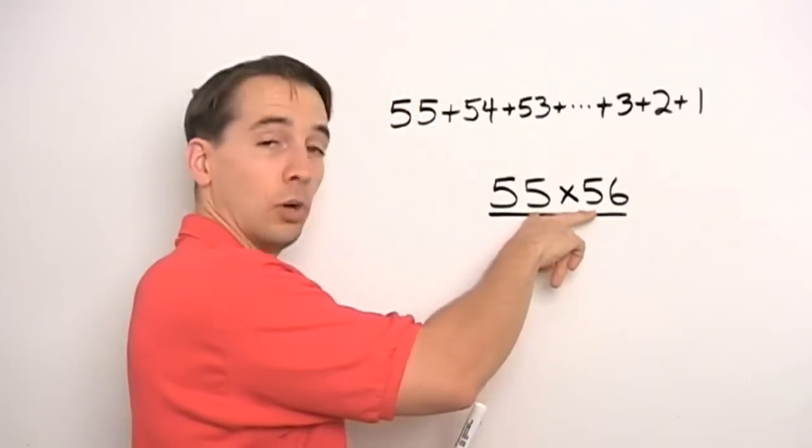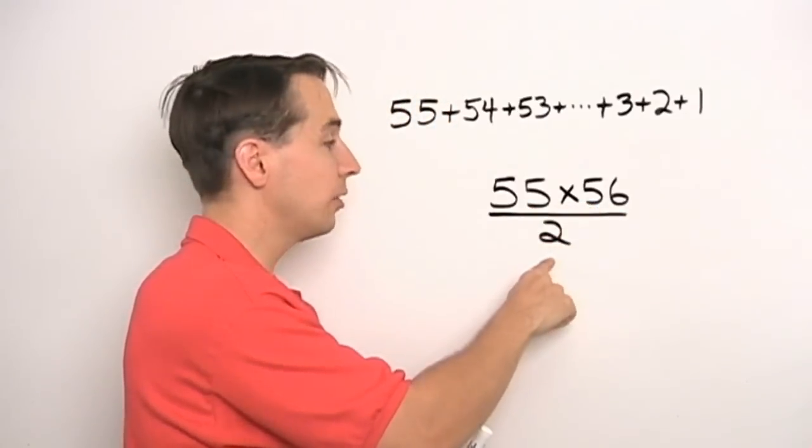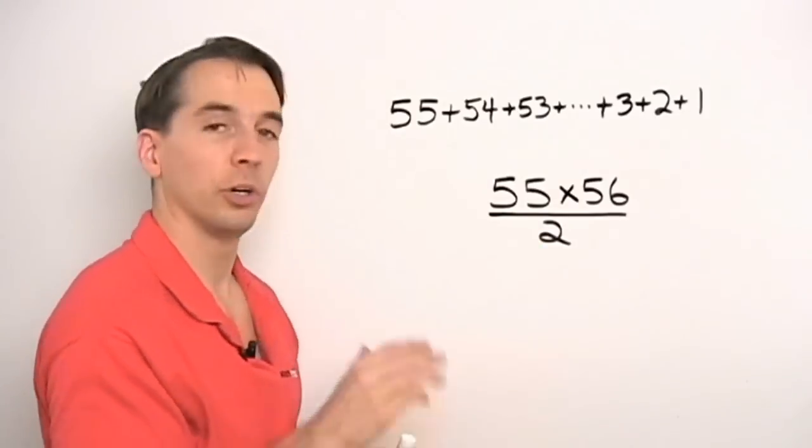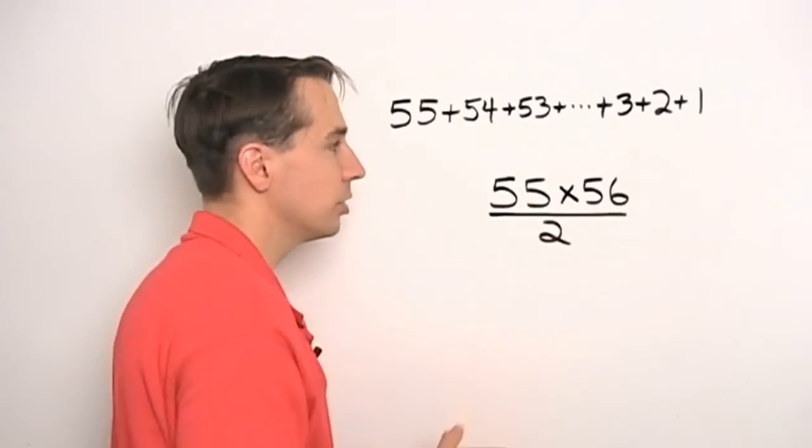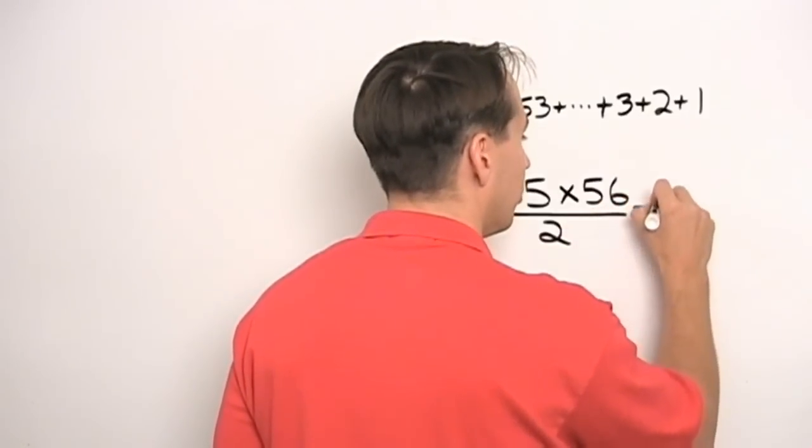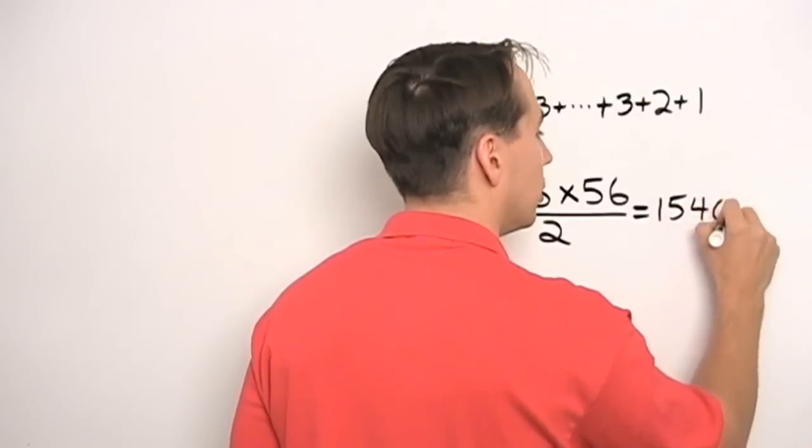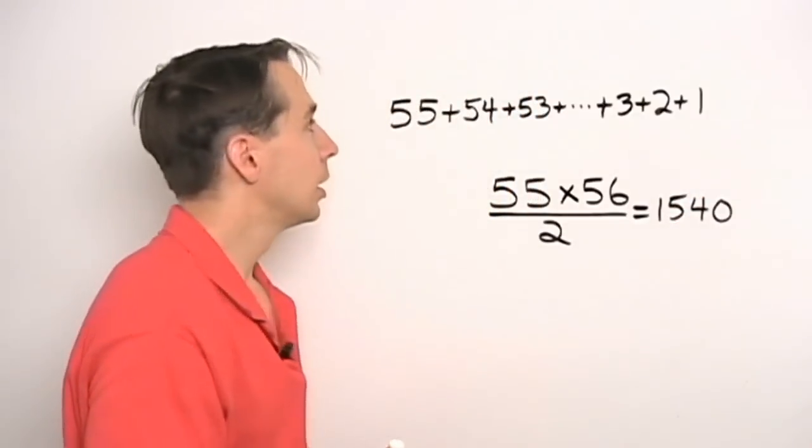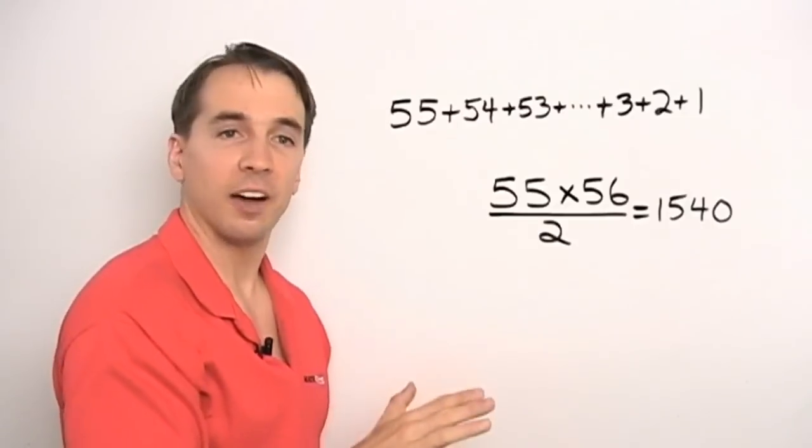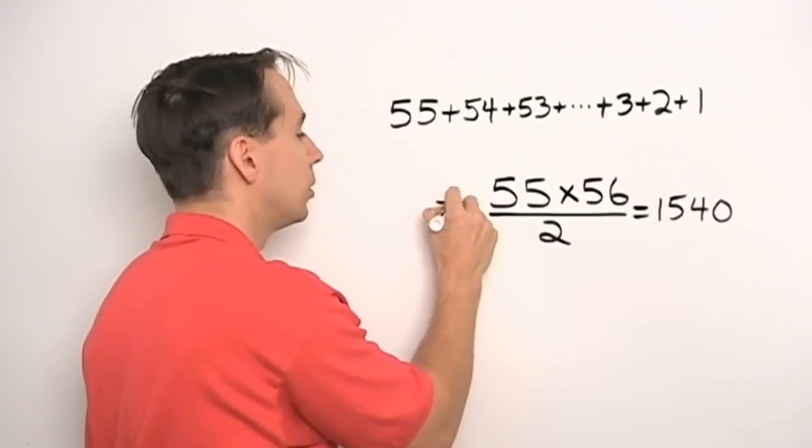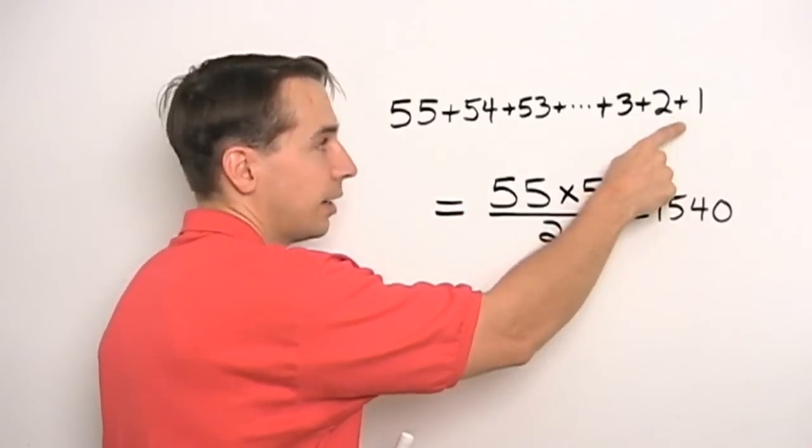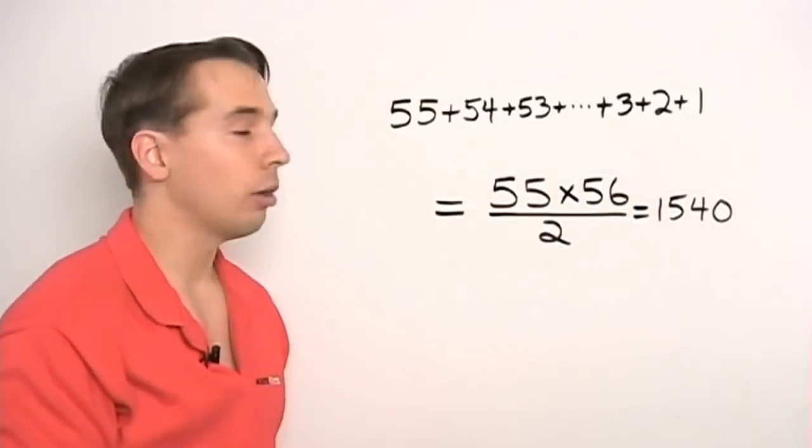And since 55 times 56 overcounts, counts every high-five twice, when we divide by two, we count every high-five once. And this will give us the total number of high-fives. And to figure this out, well, two goes into 56 28 times. Multiply that by 55, and we get 1,540. And of course, since these expressions, they both count the number of high-fives, these two expressions have to be equal. So maybe you can use this observation to figure out what a formula is for adding the numbers one, two, three, all the way up to some other number.